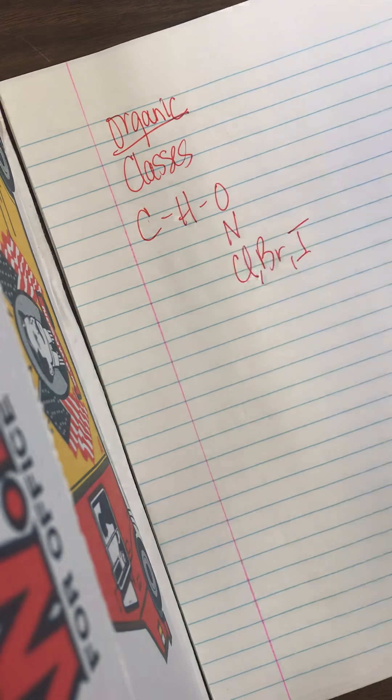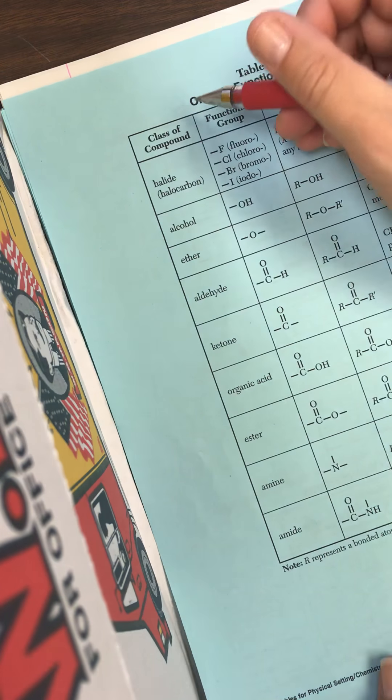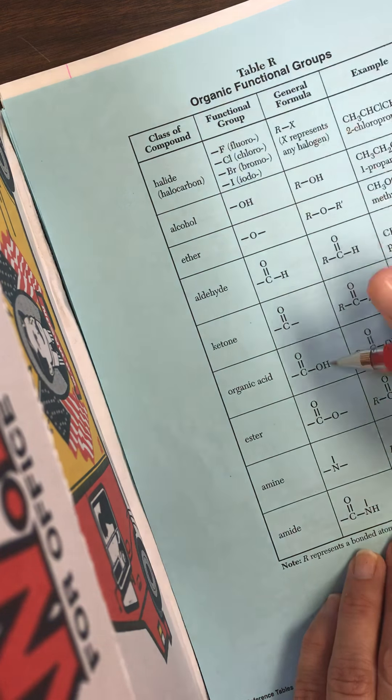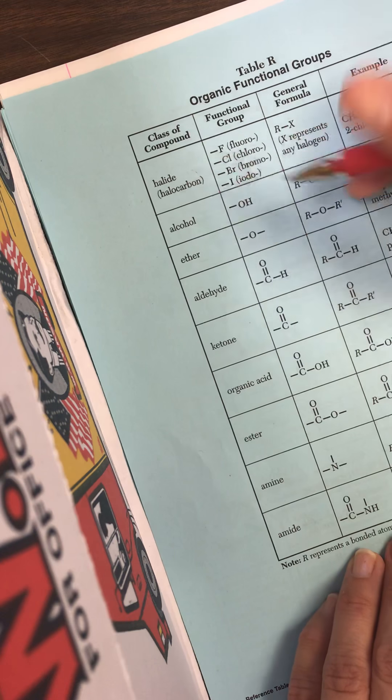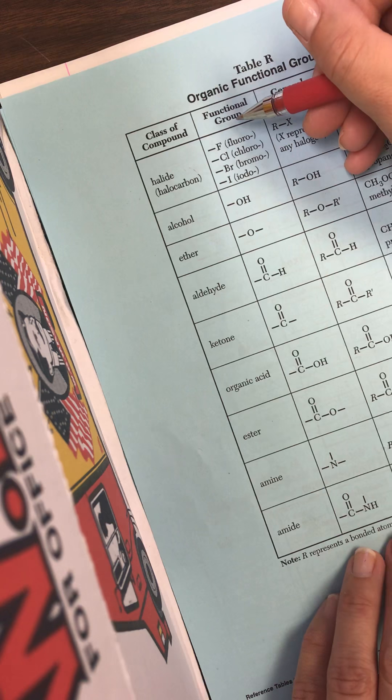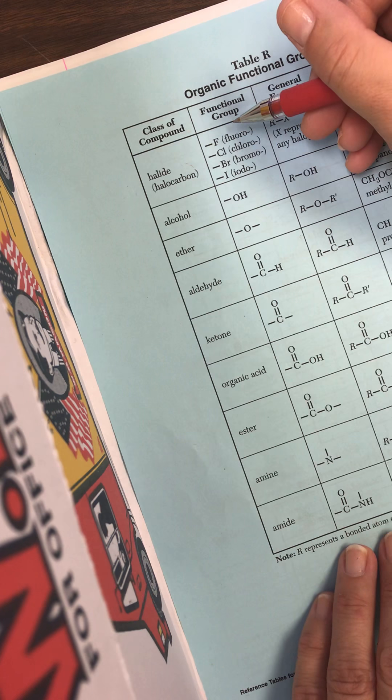So these classes of organic molecules are all on Table R. So here's how you read Table R. First of all, I would go to the second group because this is the classification. This is what you're going to look for in your molecule. A functional group is what is unique about your molecule.